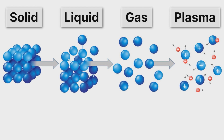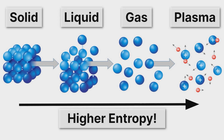And the least ordered turns out to be the plasma. So as we go from solid to liquid, we increase in entropy. And as we go from liquid to gas, we increase in entropy again. Actually, this increase is very large because gases spread out so much compared to liquids. And as we go from gas to plasma, we once again increase in entropy.